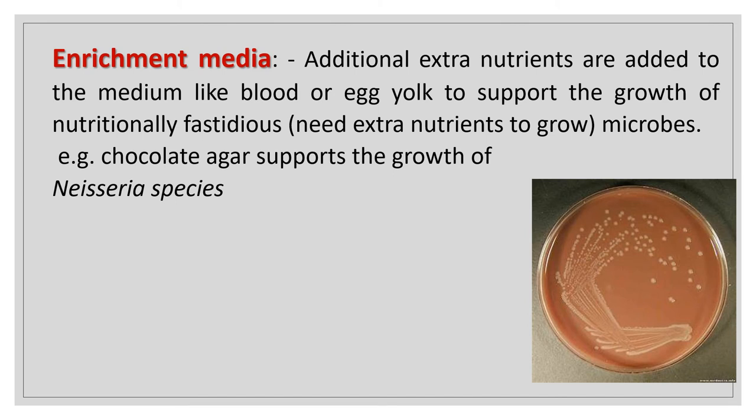Enrichment media: additional extra nutrients are added to the medium, like blood or egg yolk, to support the growth of nutritionally fastidious microbes — microbes that need extra nutrients to grow. An example is chocolate agar, which supports the growth of Neisseria species.